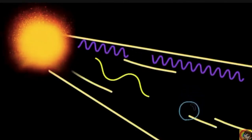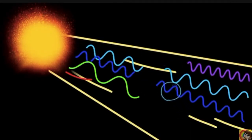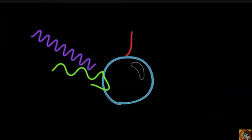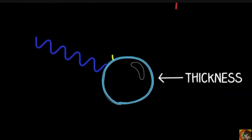White light is made up of all the colors of the rainbow and different colors correspond to different wavelengths. Which wavelengths amplify and cancel out depends on the thickness of the water layer.